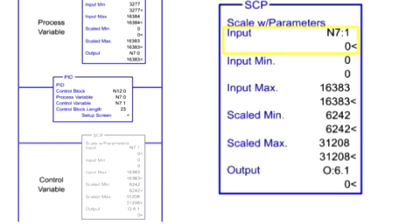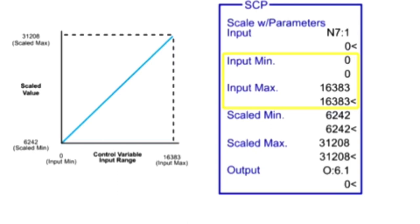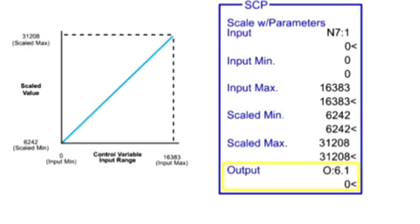The input parameter of the SCP contains the memory address of the PID output values that will be scaled. The input minimum and input maximum are programmed as the smallest and largest values of the input range. The input value is then scaled between the ranges programmed in Scaled Minimum and Scaled Maximum parameters. Scaled Minimum value is programmed as 6,242, representing the low end of the analog output module range. Scaled Maximum value is programmed as 3,208, representing the high end of the analog output module range.